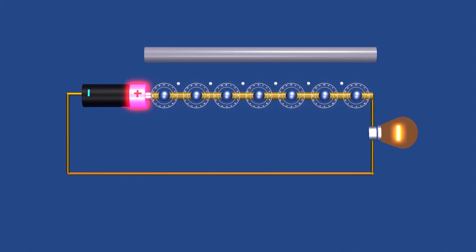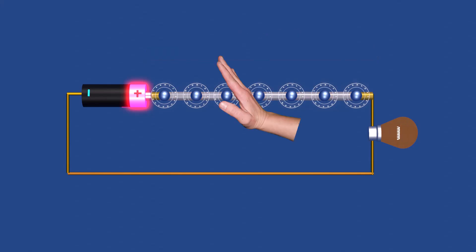In contrast, materials like rubber and plastic lack free electrons, offering high resistance to the flow of charges. These are known as insulators.